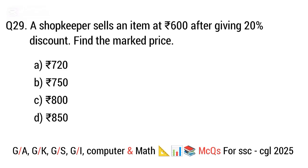Question 29. A shopkeeper sells an item at 600 after giving a 20 percent discount. Find the marked price. The right answer is option B.